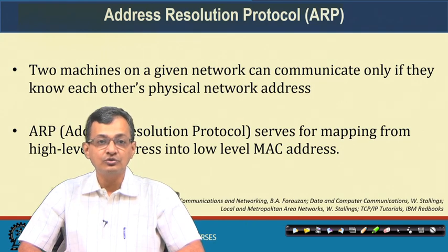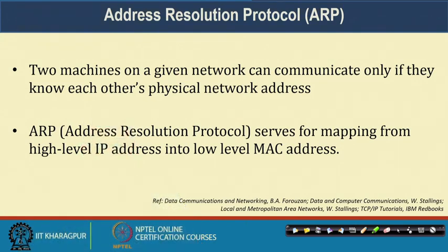Just a quick recap: any two machines on a network can communicate only if each other's physical address and network address are known. Unless you know the physical address, communication cannot happen. There is a need to resolve the higher level IP address to a low level machine address or MAC address. Any transmission - host to router, router to router, host to host, or router to host - requires the hardware address or MAC address of the next hop. That is exactly the job of ARP, the Address Resolution Protocol.